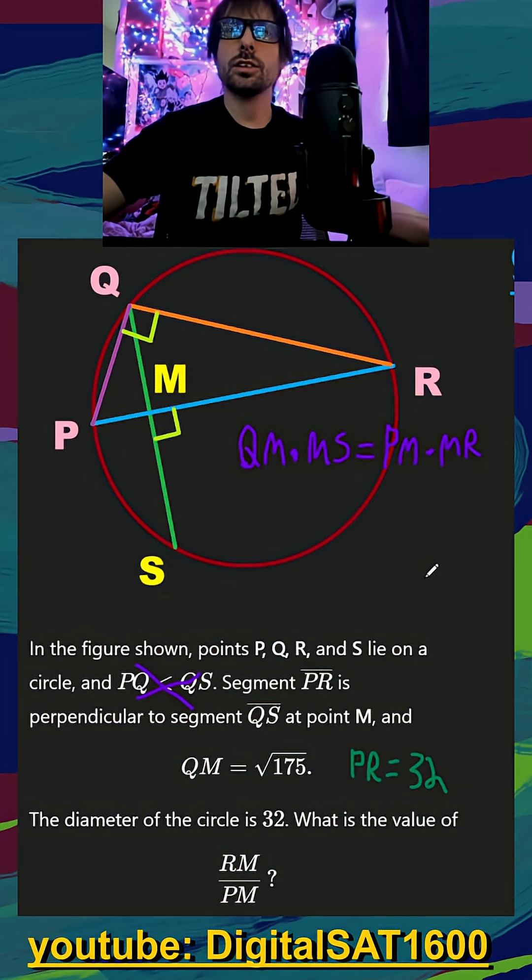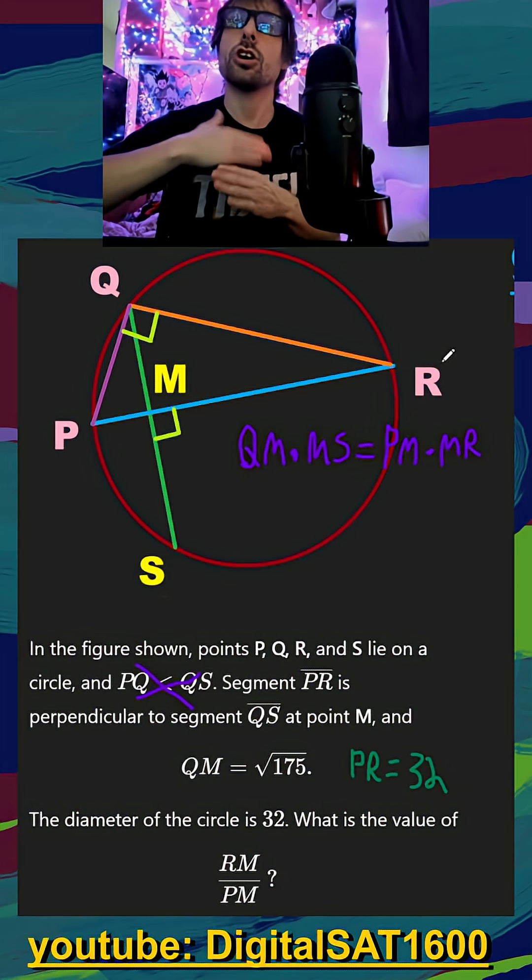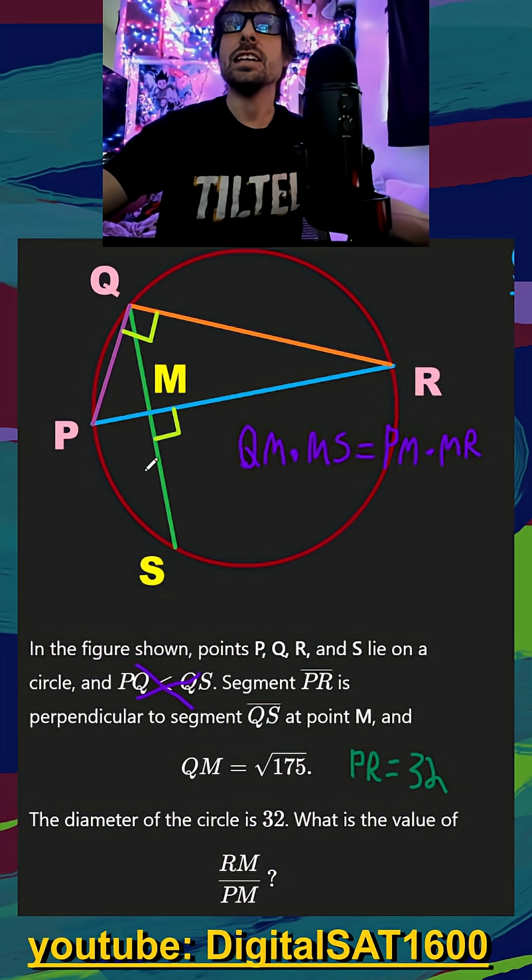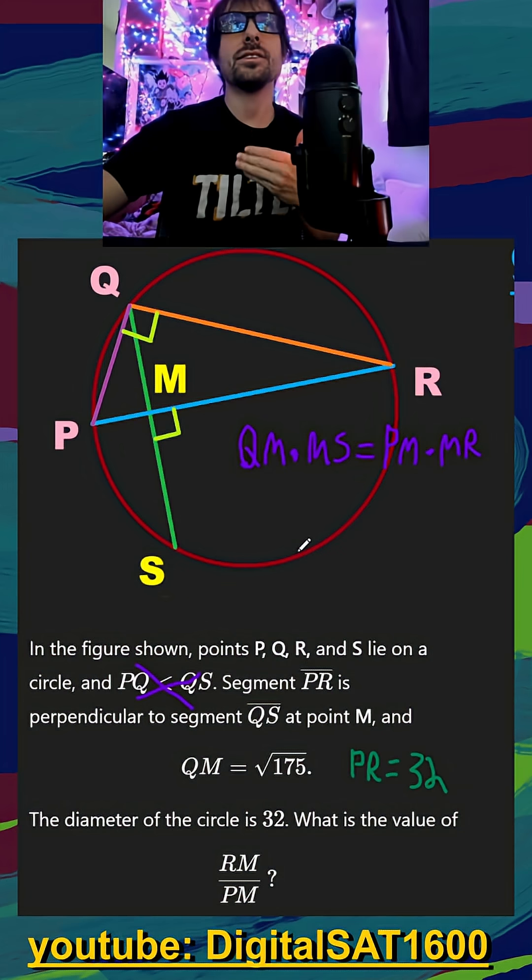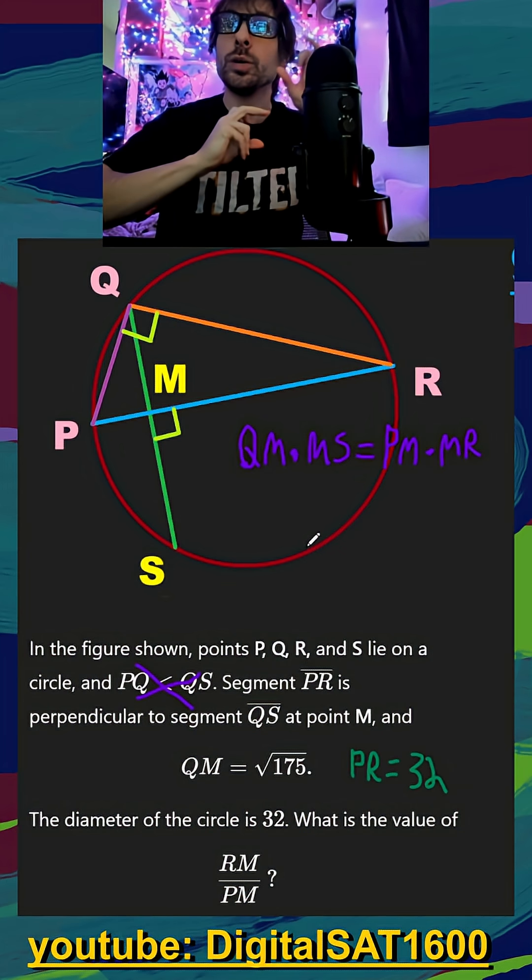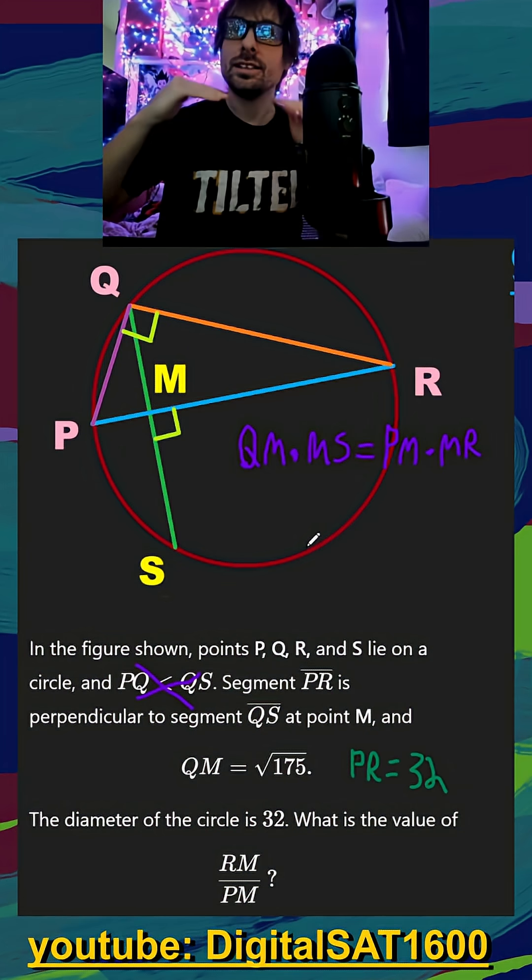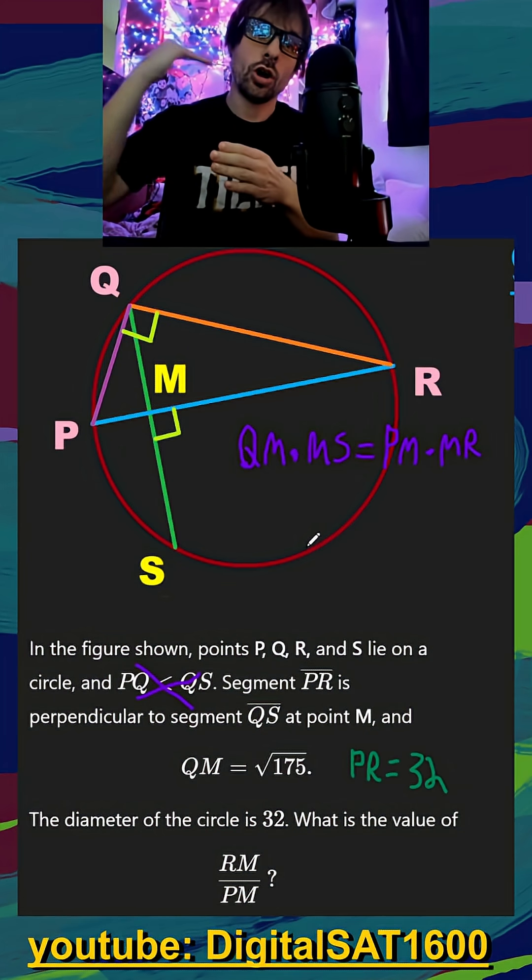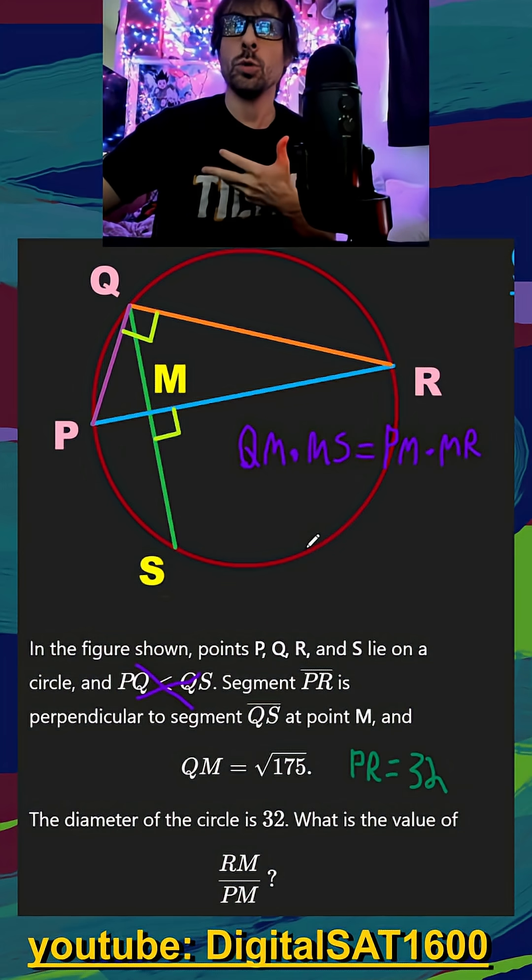This leads us to our next rule, which is going to rely on PR being our diameter. Remember that a diameter has to go through the center of our circle, so we can almost treat this line like it's cutting our circle in two equal halves. It's also very important that this chord, QS, is perpendicular to PR. What that's doing is it's automatically bisecting that chord into two equal halves.